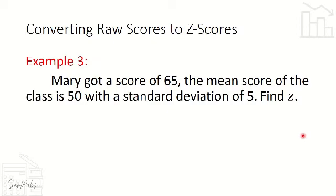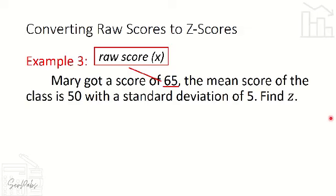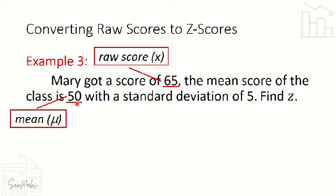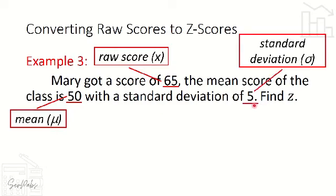Let's have a worded problem as an application of our topic. Mary got a score of 65. The mean score of the class is 50 with a standard deviation of 5. Find Z — the Z score equivalent of 65 based on our given data. First, we identify the given values: the raw score X is 65, the mean mu is 50, and the standard deviation sigma is 5.